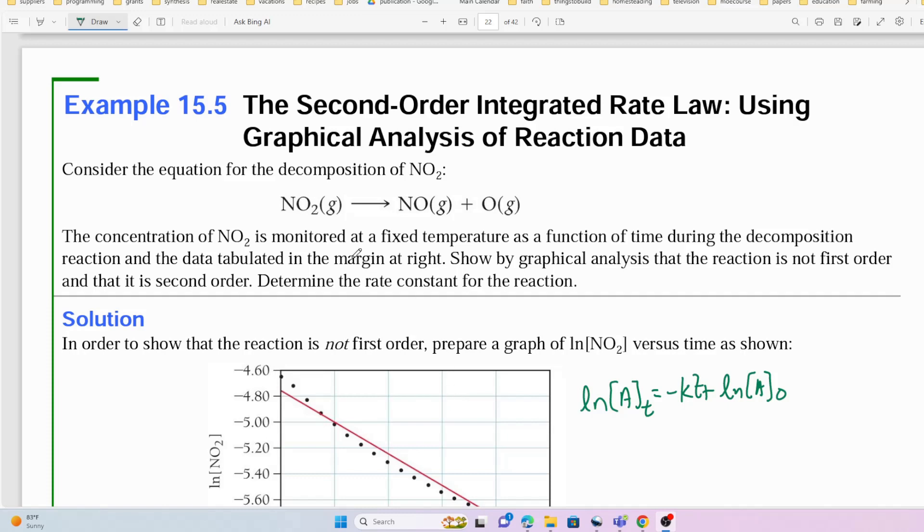Consider the equation for the decomposition of NO2 where NO2 forms NO plus O2. The concentration of nitrogen dioxide is monitored at a fixed temperature as a function of time during the decomposition reaction, and the data is tabulated in the margin at right. Show by graphical analysis that the reaction is not first order and that it is in fact second order, and determine the rate constant for the reaction.